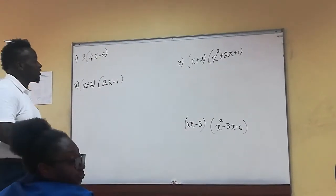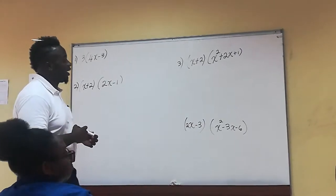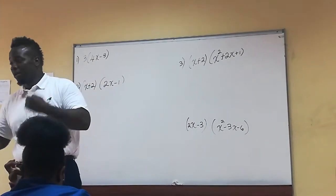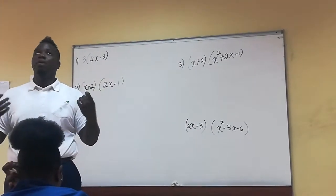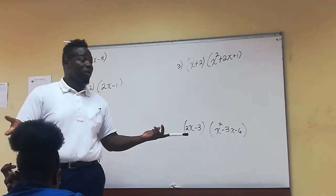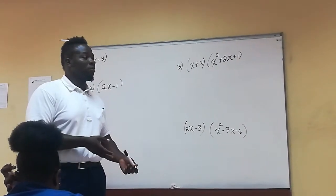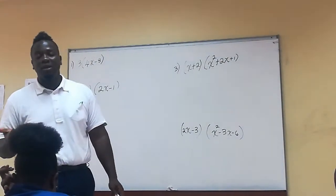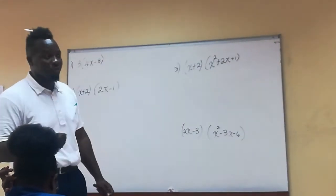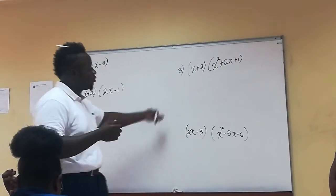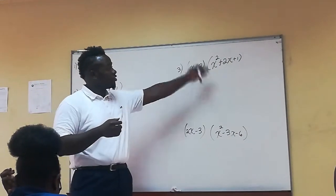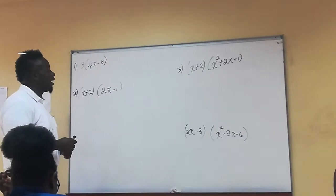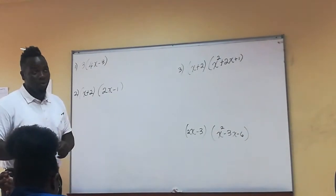Today's lesson we are going to look at how to multiply a binomial by a trinomial. A polynomial is just a collection of different terms — a monomial is just one term, bi means two, and trinomial means three. Before we get to binomial by trinomial, we're going to start from the monomial by polynomial.